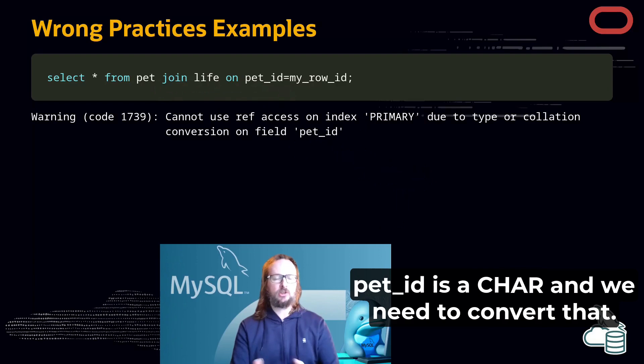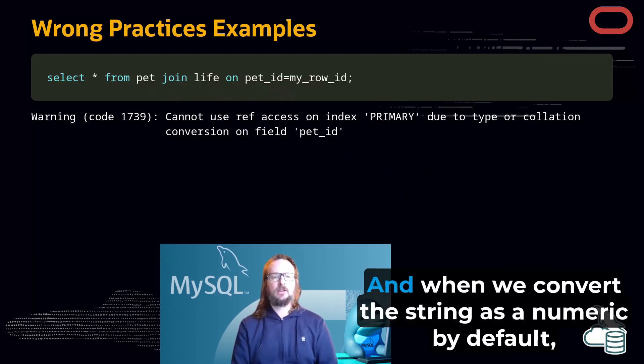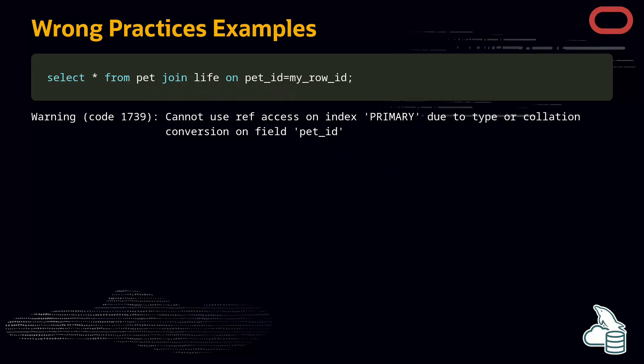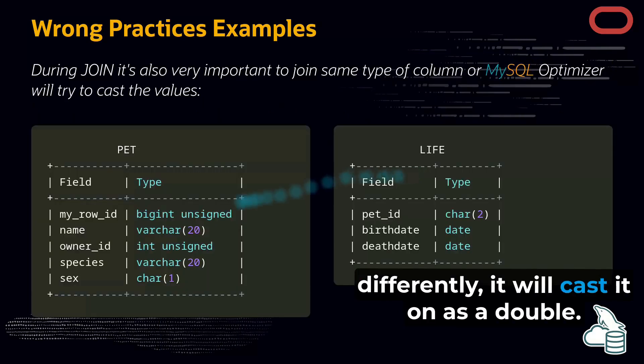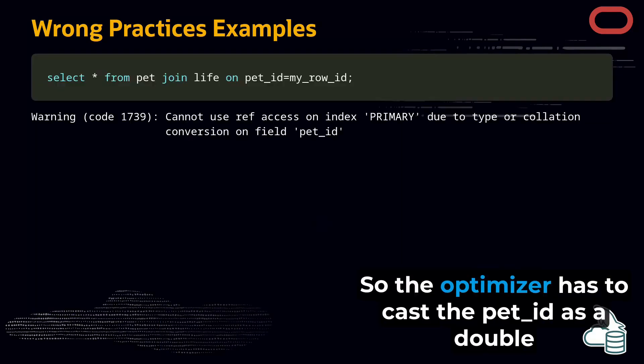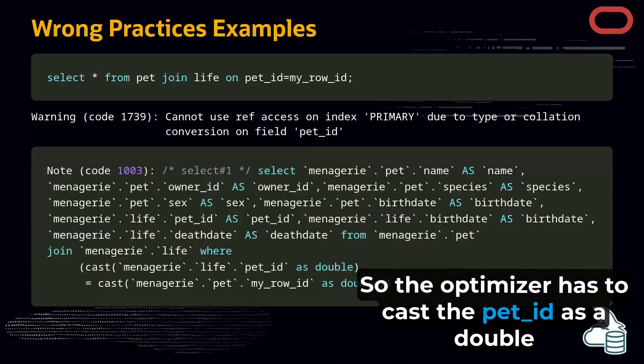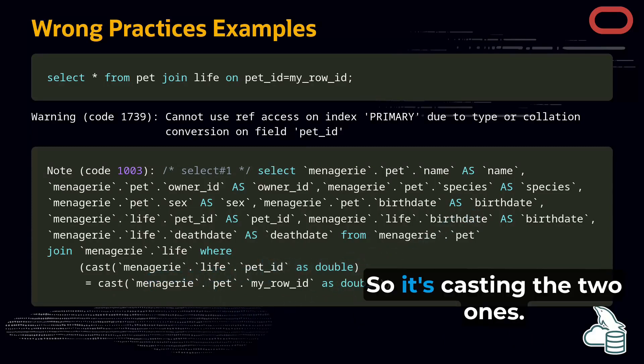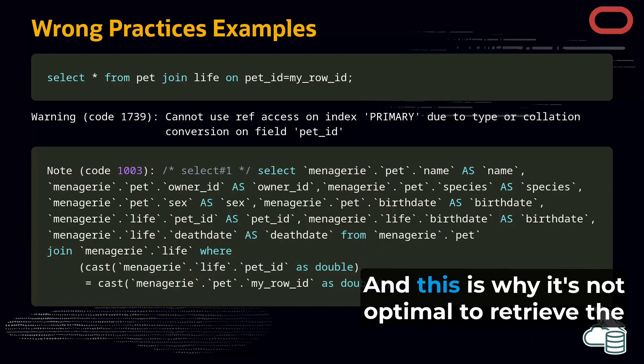Of course, pet ID is a char and we need to convert that. And when we convert the string as a numeric, by default, MySQL will cast it as a double. So this is what we can see here. The optimizer has to cast the pet ID as a double and also cast the row ID as a double. So it's casting the two.